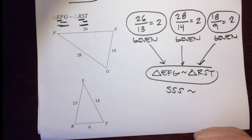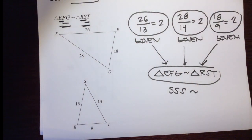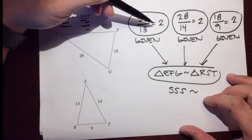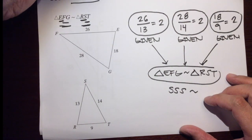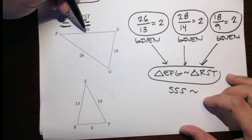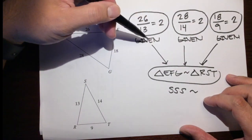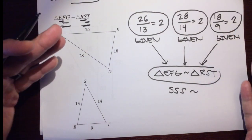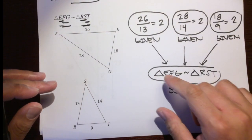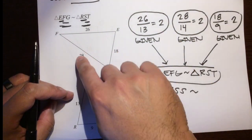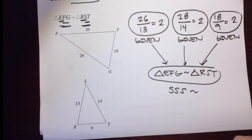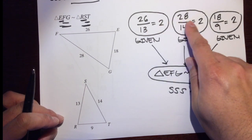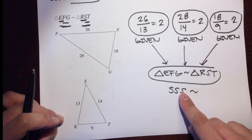That's your first flowchart to prove that two triangles are similar. Remember, for every bubble that you make, every statement you make, you have to have a reason — how did you get that evidence? We got this evidence because it was given to us; it was already in the question. These are the easiest reasons to get correct, so don't get them wrong. For these examples, all the reasons are going to be given — if it's already in the question, just put 'given.'